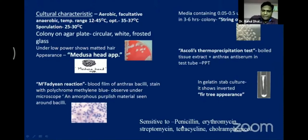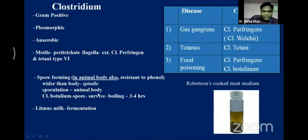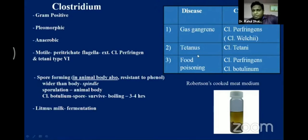Bacillus anthracis is sensitive to penicillin, erythromycin, streptomycin, and tetracycline. Now, anaerobic Clostridia: all Clostridia are motile except Clostridium perfringens and Clostridium tetani type 6. They have the capacity to form spores in the animal body and have high proteolytic activity. Diseases caused include: gas gangrene caused by Clostridium perfringens (formerly Clostridium welchii), tetanus caused by Clostridium tetani, and food poisoning caused by both Clostridium perfringens and Clostridium botulinum. Botulinum food poisoning is called botulism.